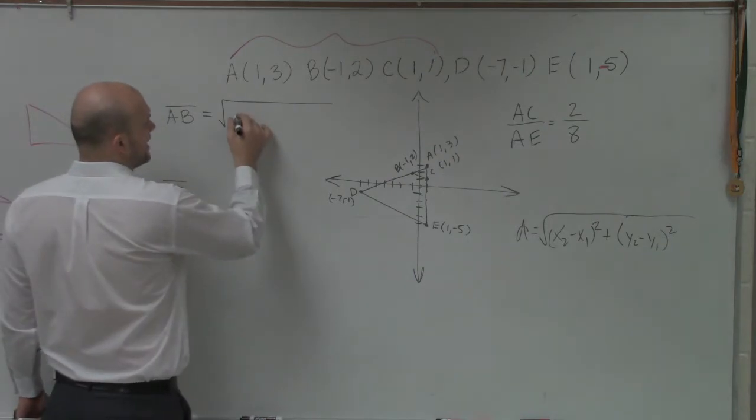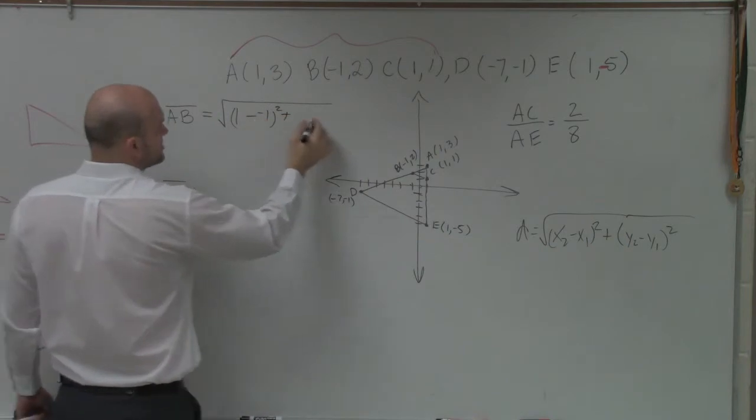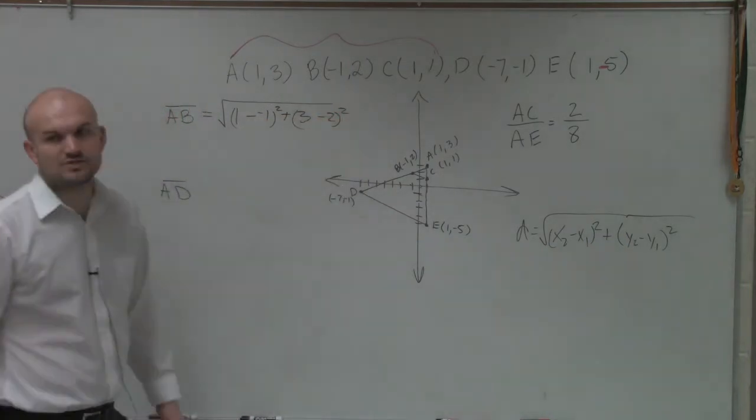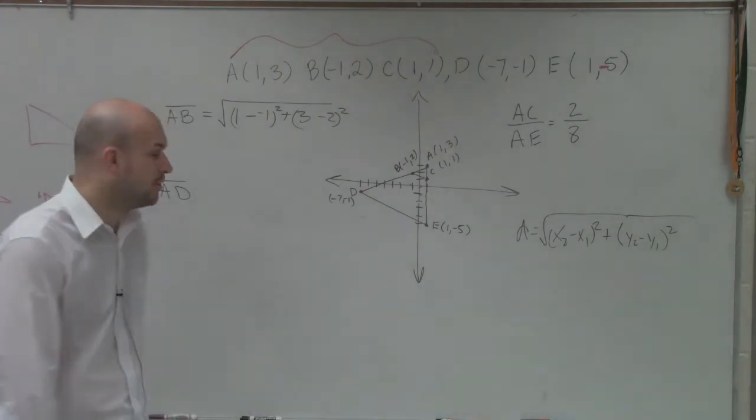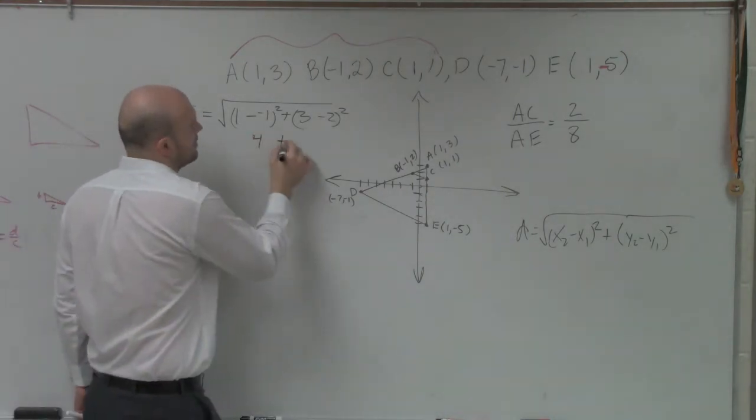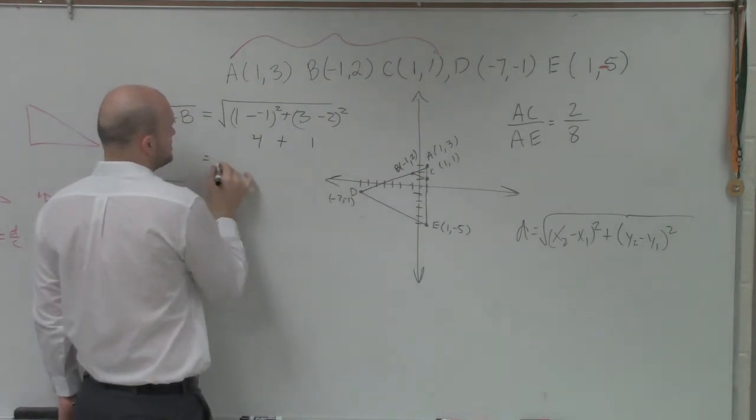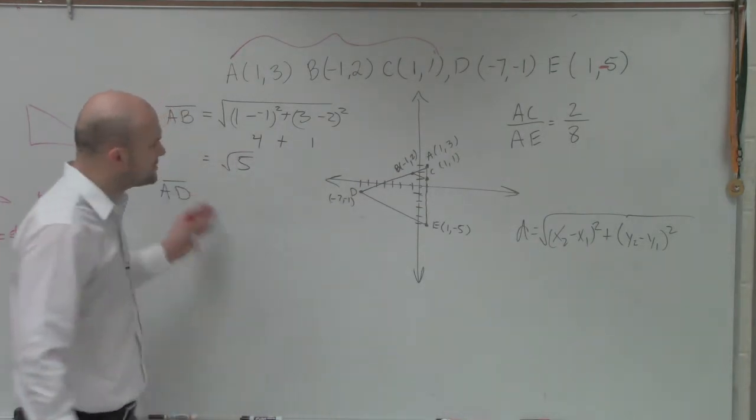So here we have 1 minus negative 1 squared plus 3 minus 2 squared. 1 minus negative 1 squared is going to be 2. 2 squared is 4. 3 minus 2 is 1. 1 squared is 1. So therefore, that equals the square root of 5. Now we'll do AD.